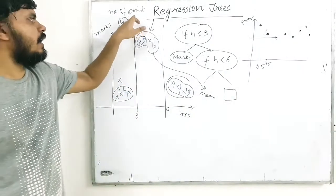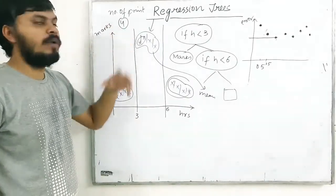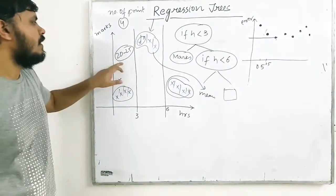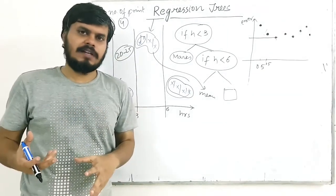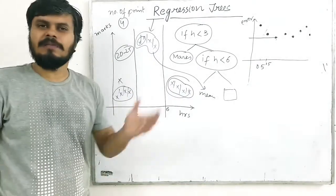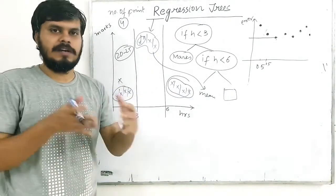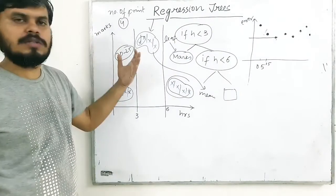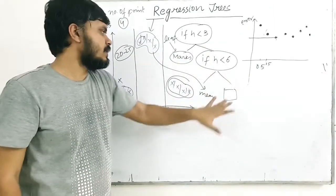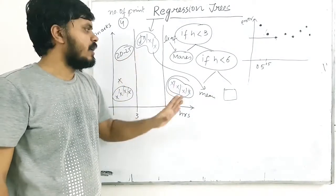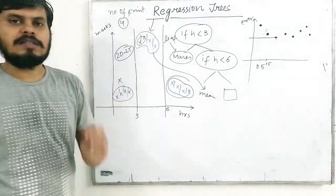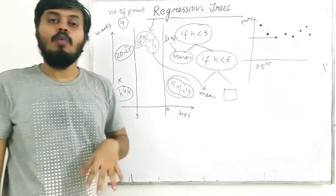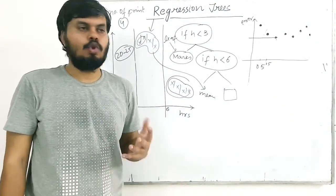This threshold parameter — minimum number of points — is something you can set in the algorithm. Generally speaking, 25 is a common number. If fewer than 25 points remain after a split, you just consider it a leaf node and predict the mean. You keep splitting until that condition is not met. Now, one last question: here we only had one feature (hours). What if there are other factors? How would the split be decided then?